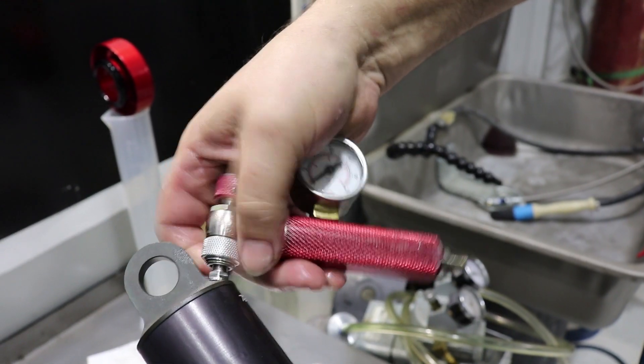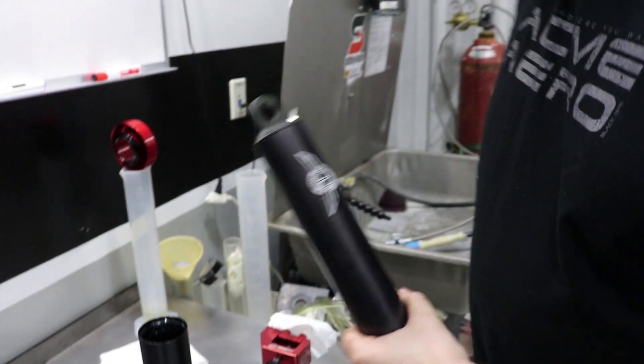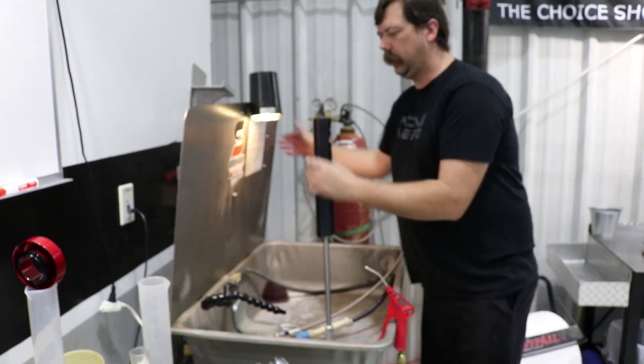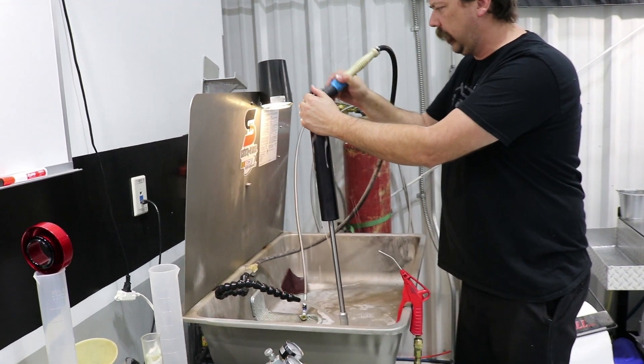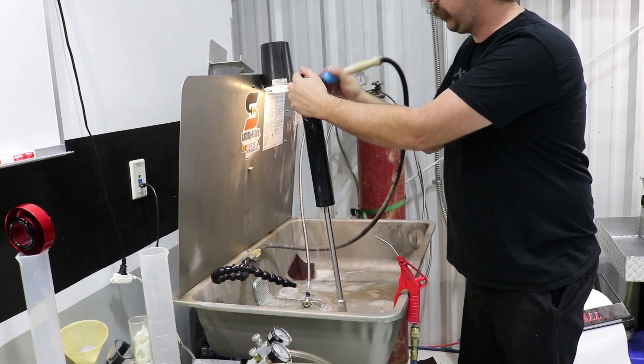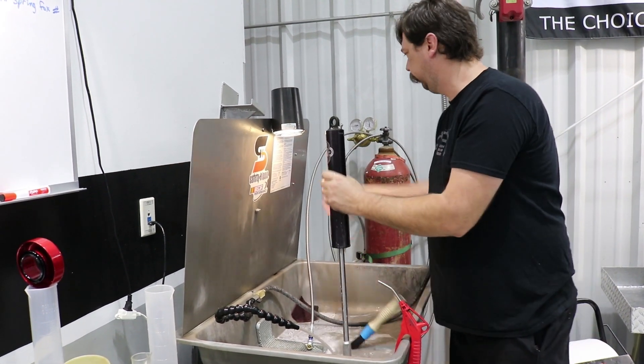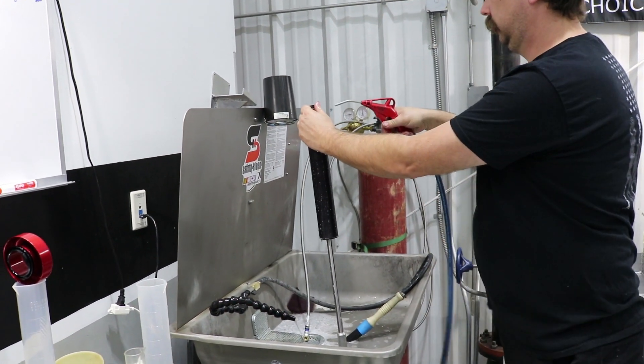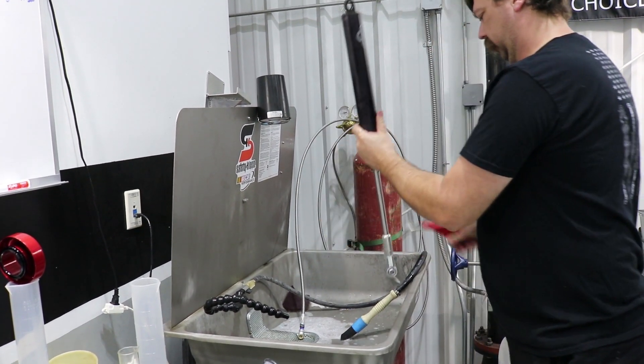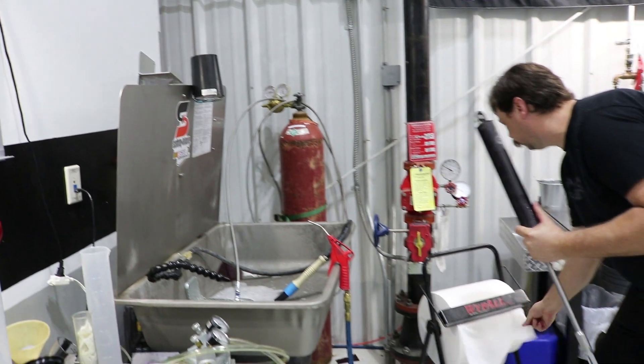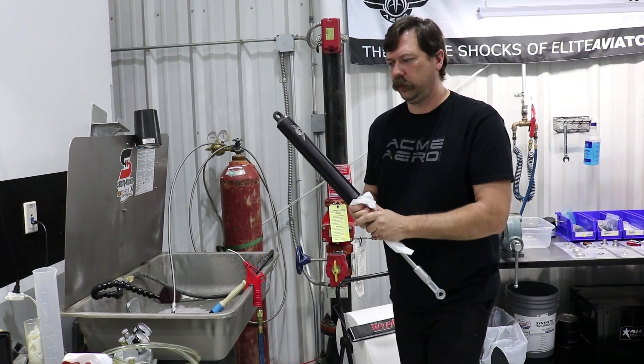Now we're charged. We'll wash it up. This is a good chance, even after all of our precautions, to check and make sure that we don't have anything leaking. Check around the Schrader valves, getting all the oil off. That's your assembled shock.